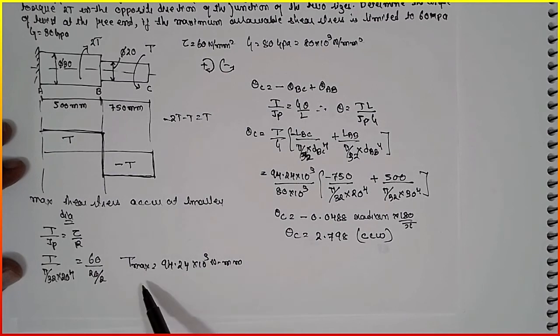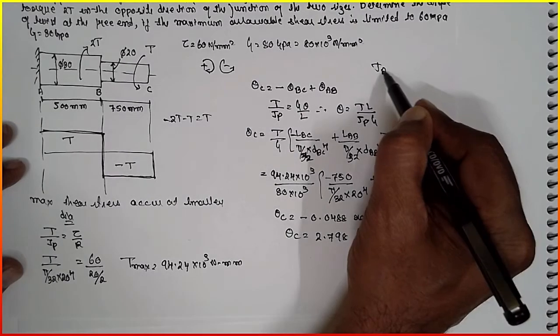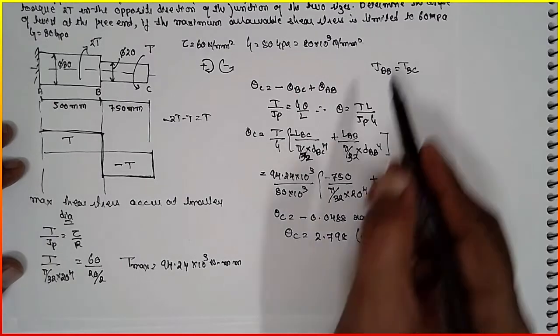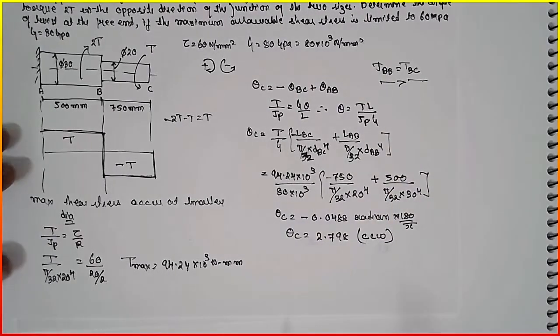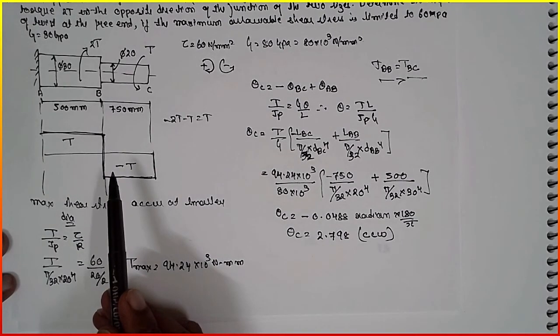Why we have to take common? Because the T max. That means TAB is equal to TBC. This is the important term here. TAB is equal to TBC, minus T, positive T. Torque value is same here.